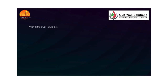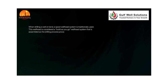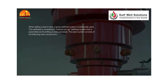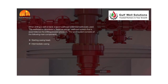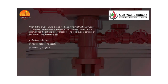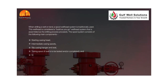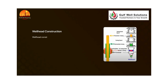When drilling a well on land, a spool wellhead system is traditionally used. This wellhead is considered a build-as-you-go system, assembled as the drilling process proceeds. The spool system consists of the following main components: starting casing head, intermediate casing spools, slip casing hanger and seal, tubing spool if the well is to be tested and completed, and studs, nuts, ring gaskets, and associated accessories required to assemble the wellhead.